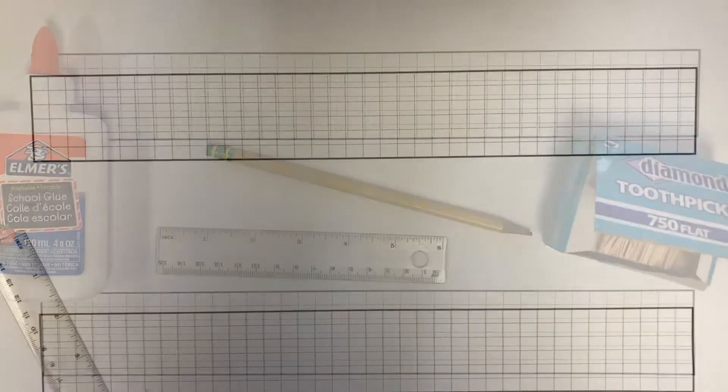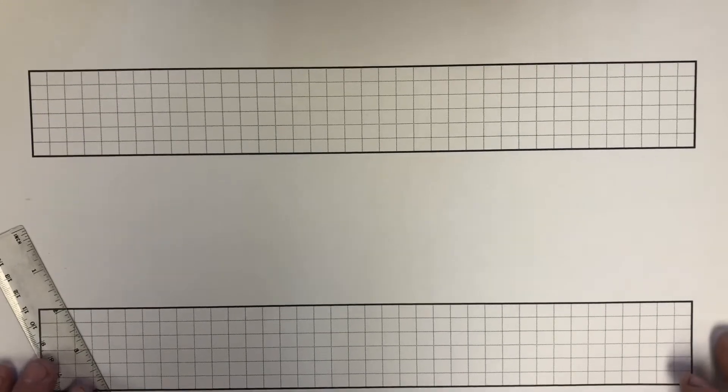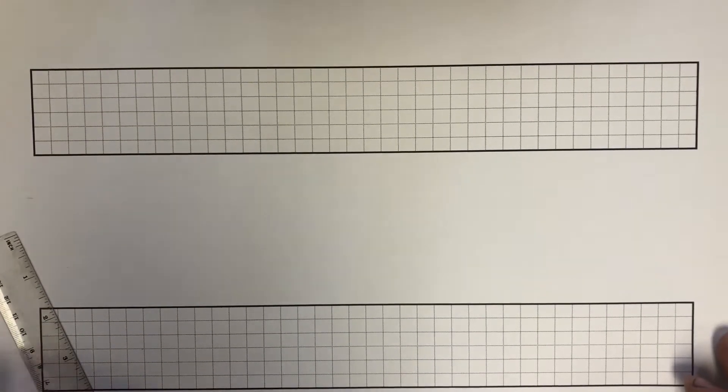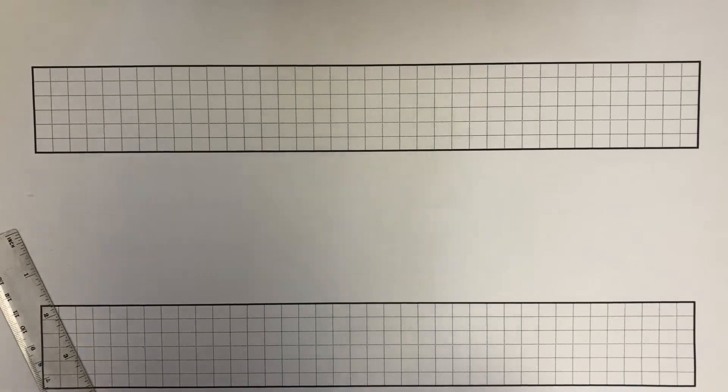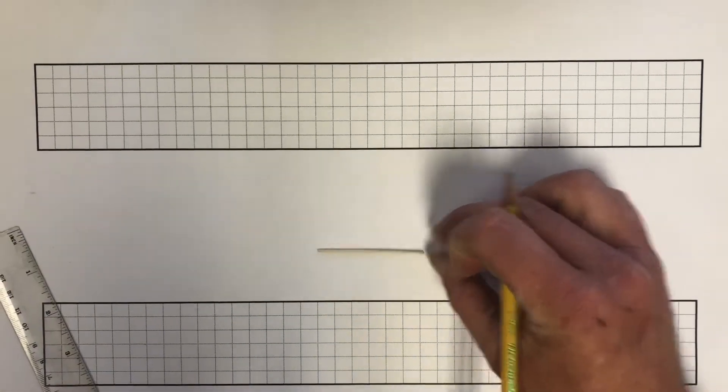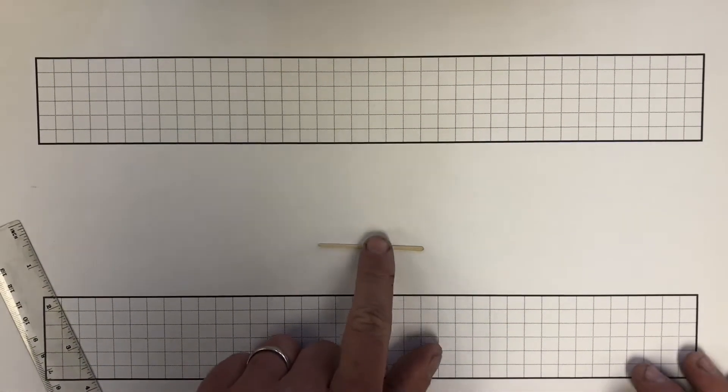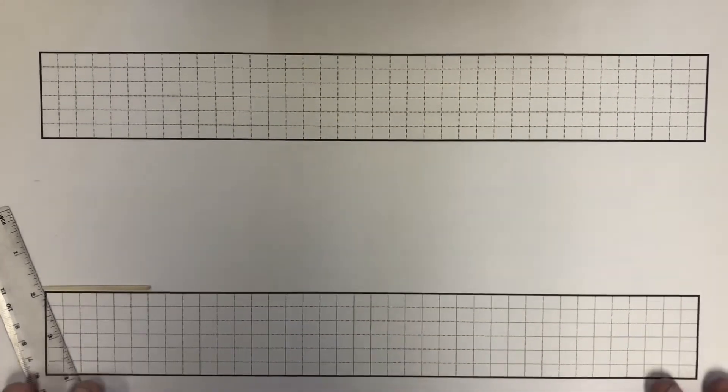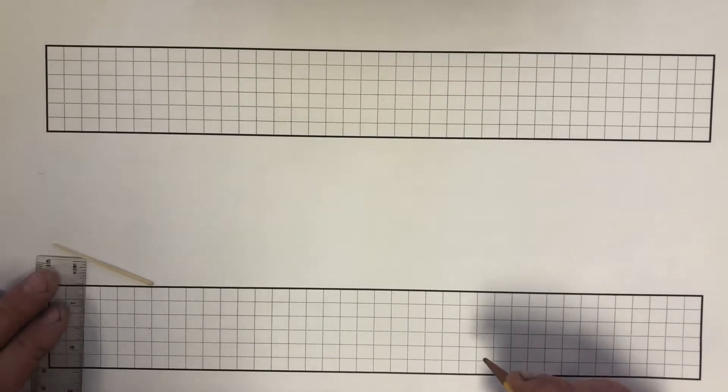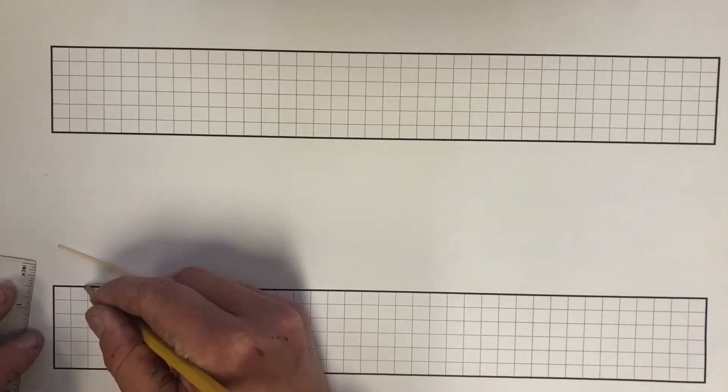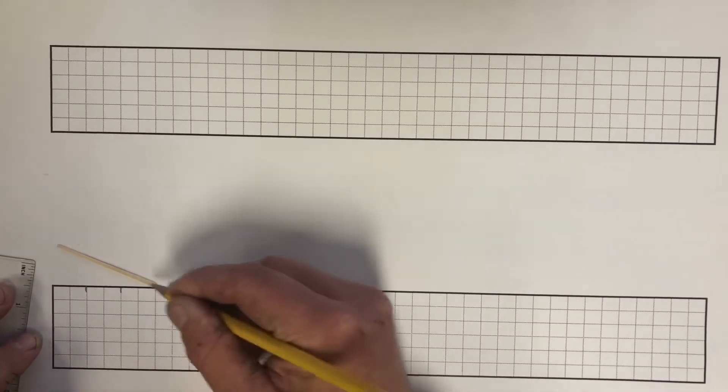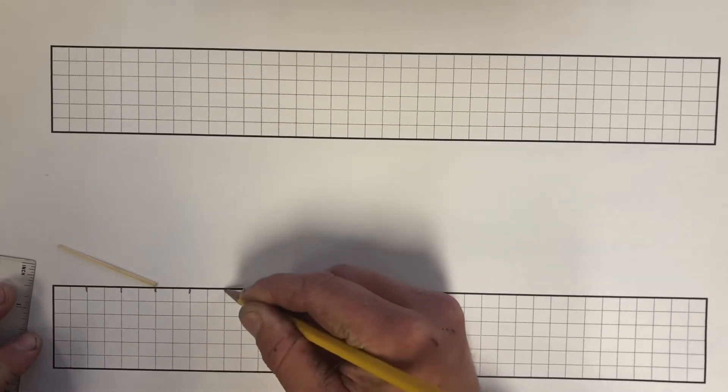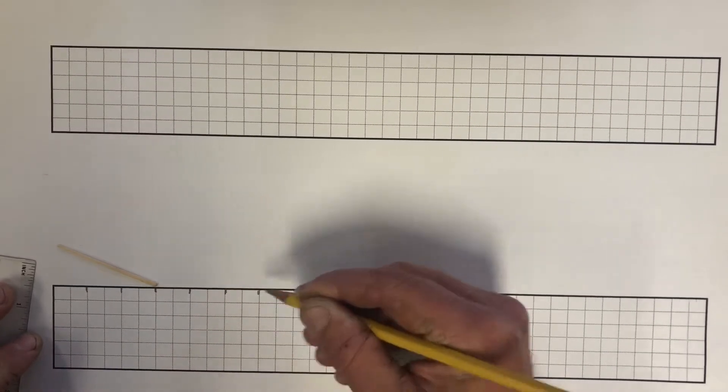Okay, here we go. Our first step is going to be marking down where the toothpicks are going to land. Now I want you to notice that a standard flat toothpick is six squares long. When we glue this together, we need to know where the overlap is going to be. So go through and mark every two squares on your paper. This is going to help us keep everything evenly spaced.